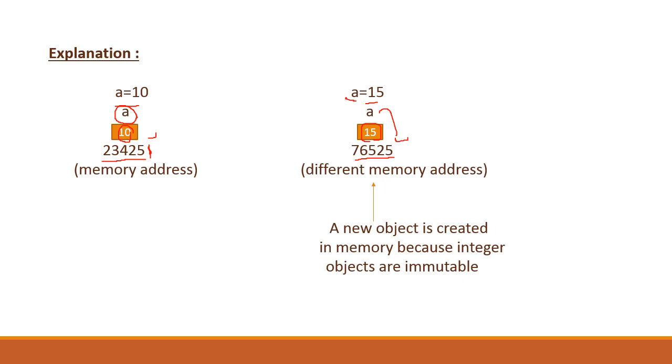So we have two objects with 10 value and 15 value. In this case, a new object is created in memory because integer objects are immutable.